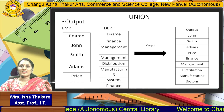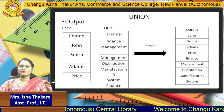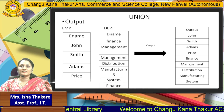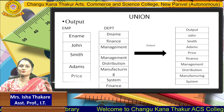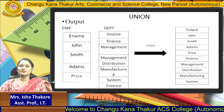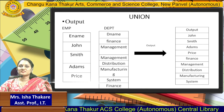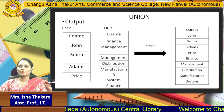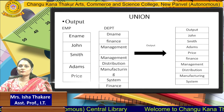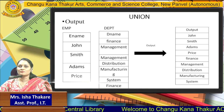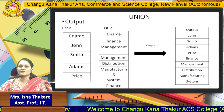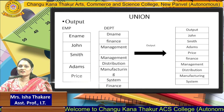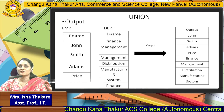So, we have John, Smith, Adams, and Price from the employee table. From the DEPT table we have D_name: Finance, Management, Distribution, Manufacturing, System, and Finance. In the department table, Management appears twice in the original table, but in the result, Management is only fetched once, since Union returns only distinct values.